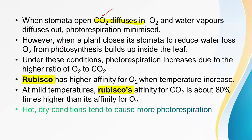When certain conditions develop — such as when plants close their stomata due to high temperature — oxygen from photosynthesis builds up inside the leaf. What happens is that the oxygen produced by photosynthesis accumulates and the oxygen concentration in the leaves builds up. Under these conditions, photorespiration increases due to the higher ratio of oxygen to carbon dioxide, and the photorespiration rate will increase.